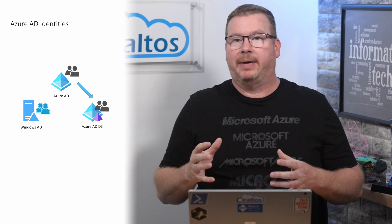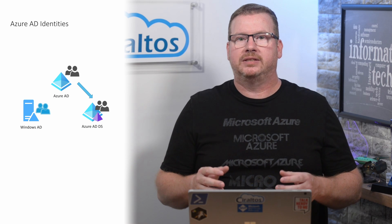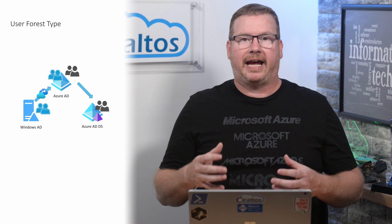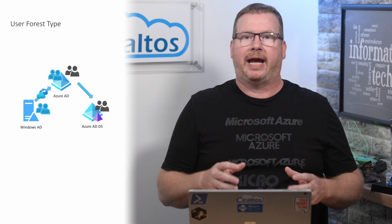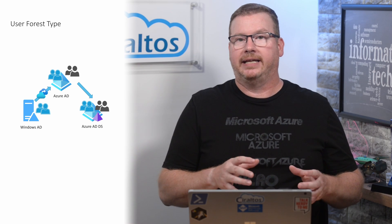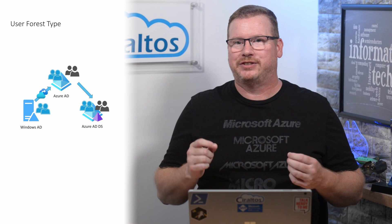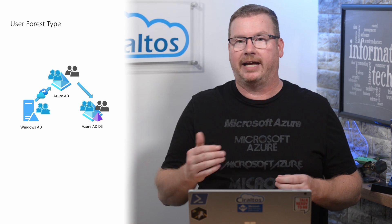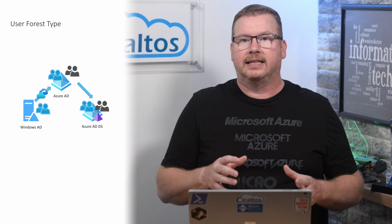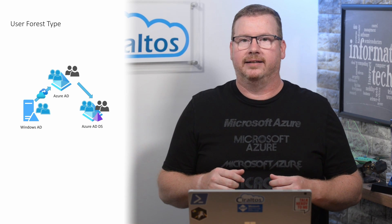We have Azure AD Domain Services set up and cloud users are replicating from Azure AD, but that doesn't get us to our requirement of users from the Windows AD domain logging into Azure AD Domain Services. At this point we have to use Azure AD Connect to replicate the users from Windows AD to Azure AD, enabling password hash synchronization. From there, the identities will replicate to the Azure AD Domain Services domain, allowing users to sign in. The legacy NTLM and Kerberos password hash synchronization has to be enabled on the Windows domain before users are able to log in.